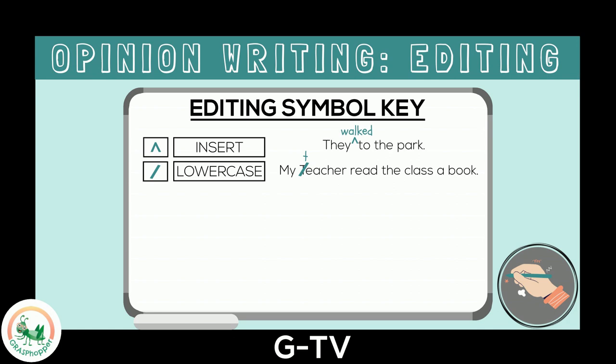The next editing symbol is three lines for capitalization. You write the three lines below a letter that needs to be capitalized. Here's an example: 'sophia ate all of the ice cream.' The name of the girl is Sophia, so I need to capitalize the S. I'll write three lines under the S in sophia and a capital S on top.